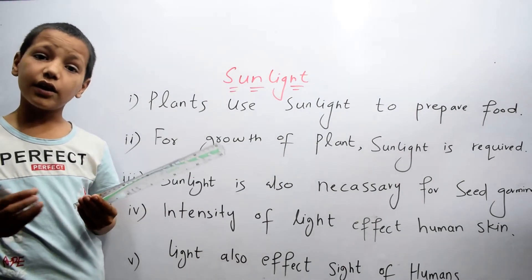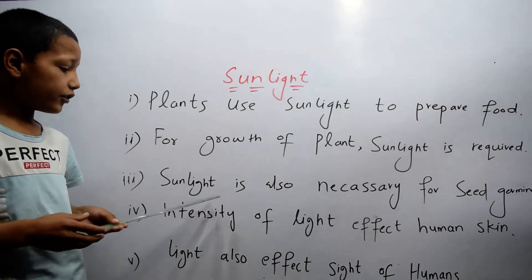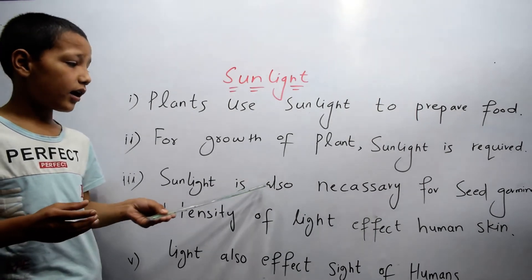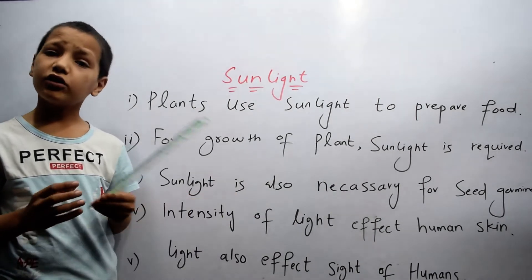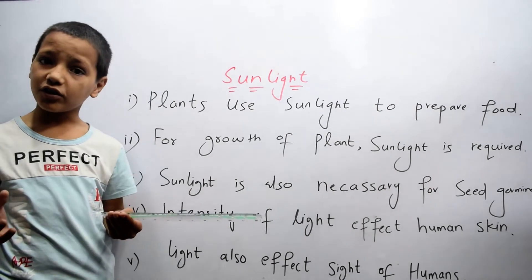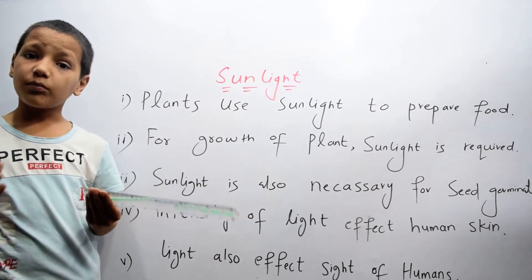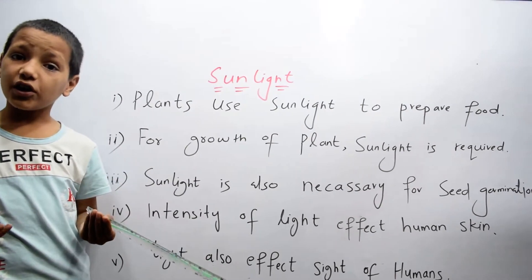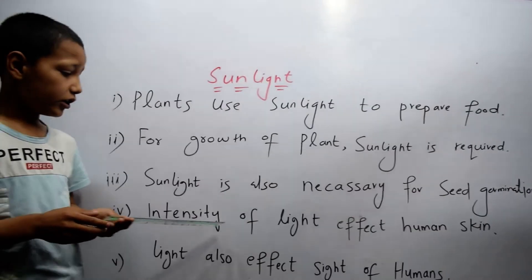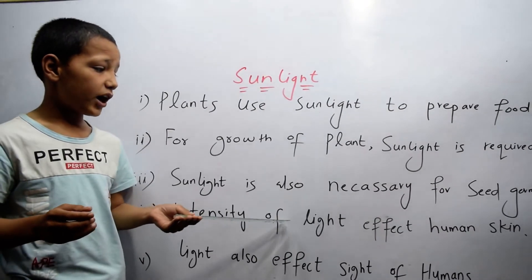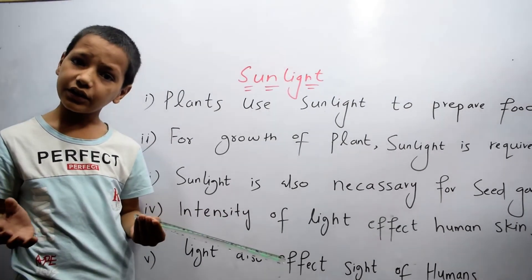The third importance is sunlight is also necessary for seed germination. The fourth importance is intensity of light affects human skin.